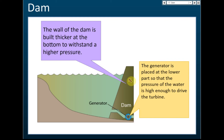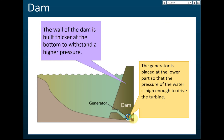Another important point is that the generator is placed at the bottom of the dam, not at the top. That is because the pressure at the bottom is the highest. The generator is placed at the lower part so that the high water pressure is sufficient to drive the turbine. The deeper into the liquid, the higher the pressure — which is why a thicker wall and a bottom-placed generator are needed.